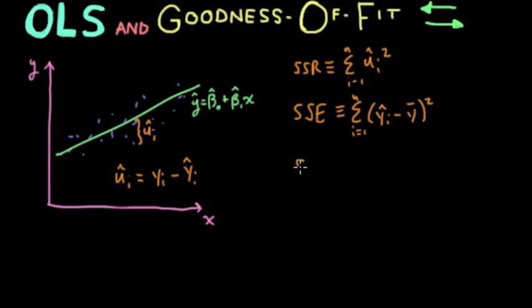We need to define one more before we can talk about the r squared. And it's called SST, or the total sum of squares. And the total sum of squares is defined as the sum of the true values of y minus the mean squared.